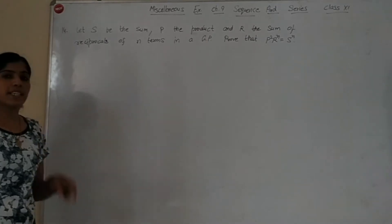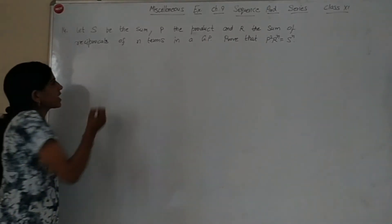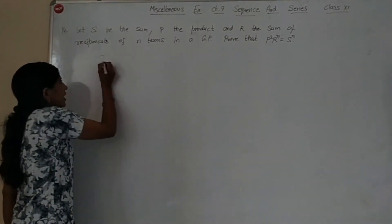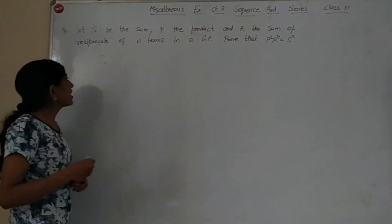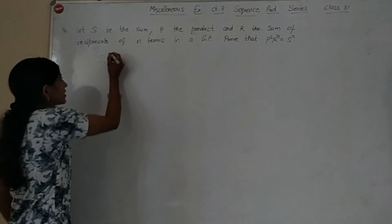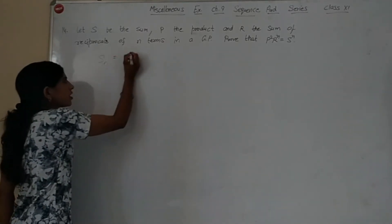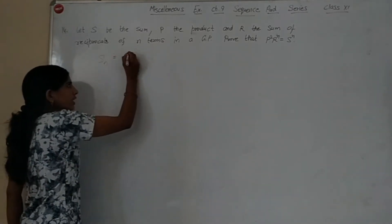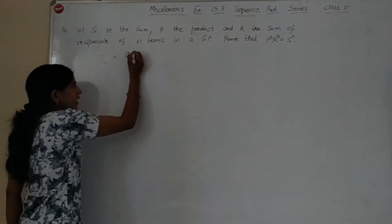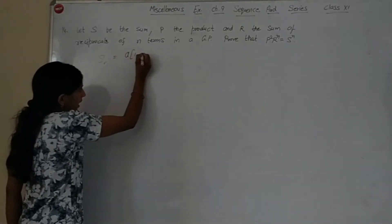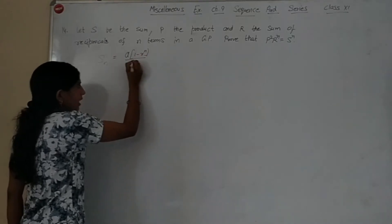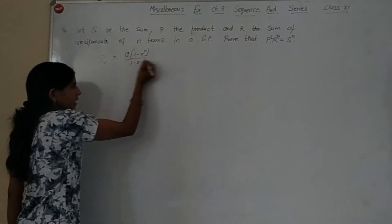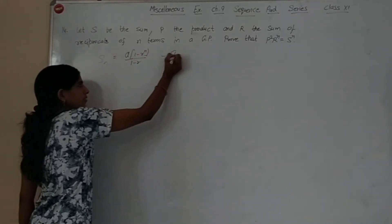So first, S is the sum of a GP. S = a(1 - rⁿ) / (1 - r).